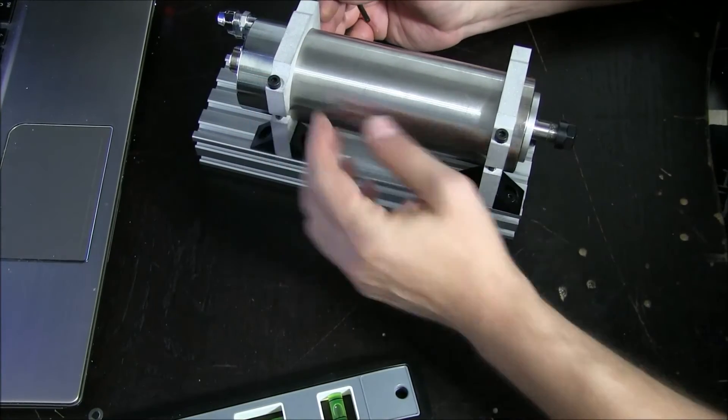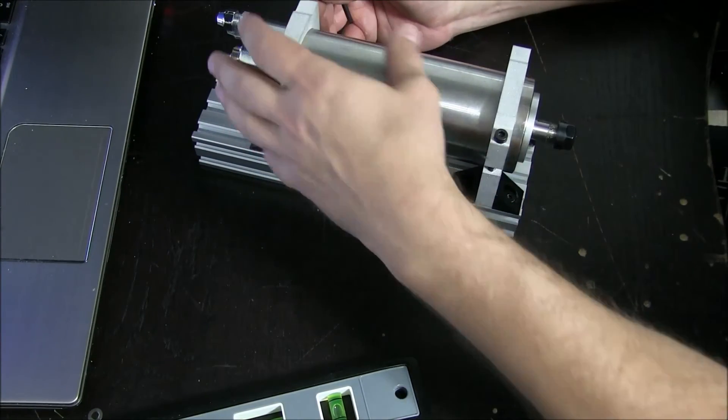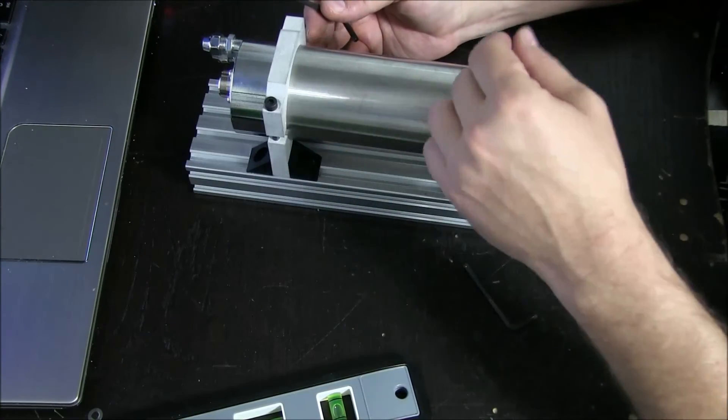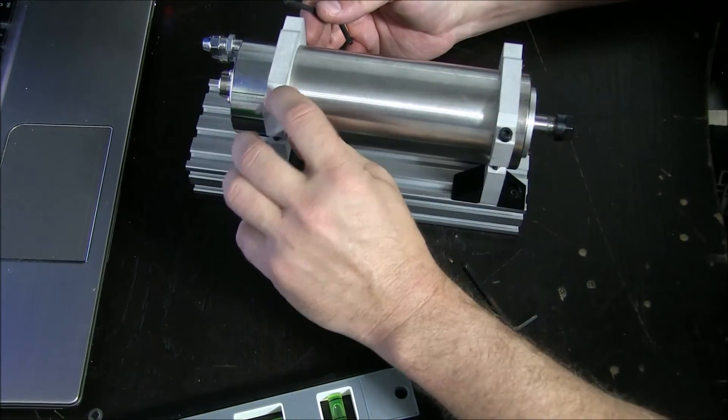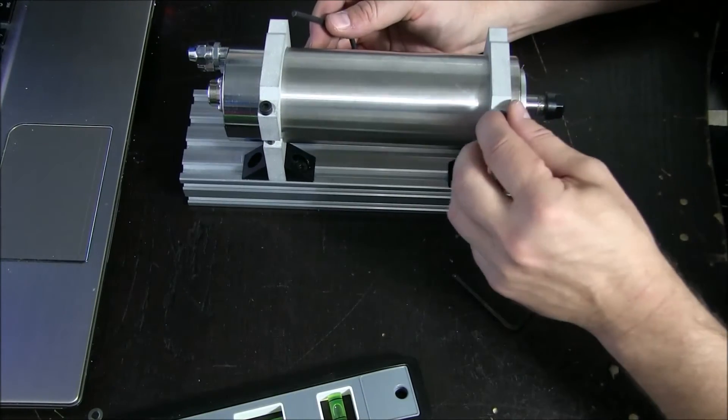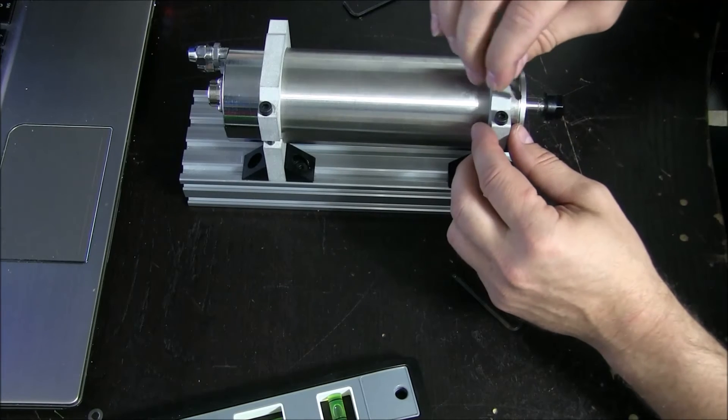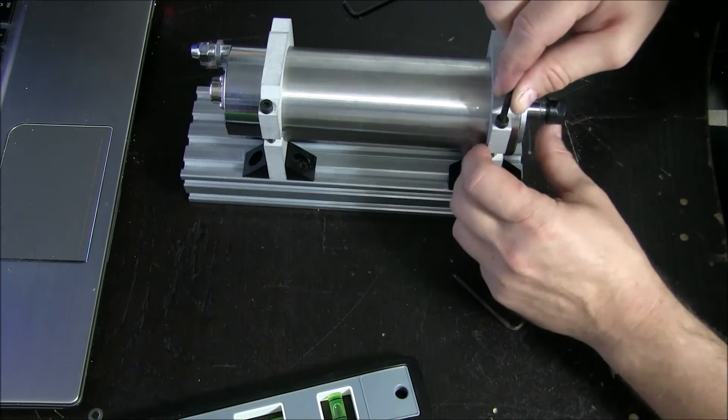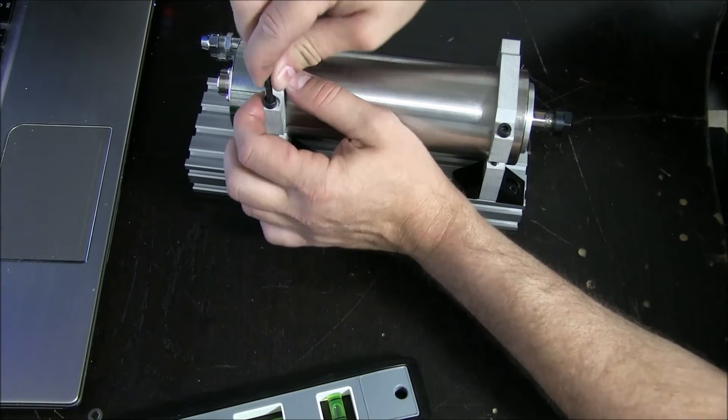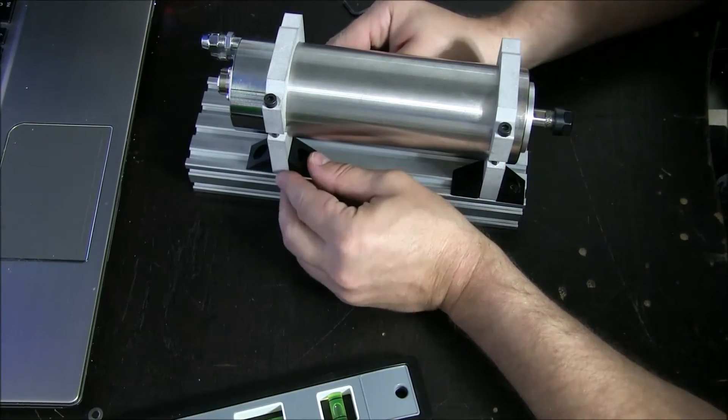Okay. Don't tighten the crud out of either one of these. Even though there's plenty of support on the spindle with the end caps and everything, you don't want to go crazy with these. Just snug them up really well, but don't just keep going until they strip out. It is aluminum, and we also don't want to hurt the spindle.